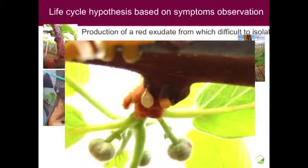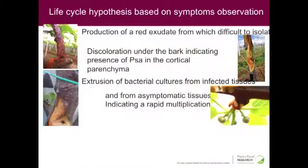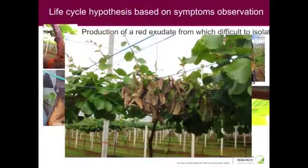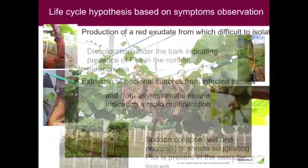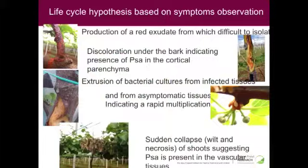We can have a drop of exudate from tissue that shows no symptoms whatsoever — the leaves are absolutely perfect, and yet you have a drop of exudate that is a pure bacterial culture, an inoculum that can infect a large part of your orchard. Finally, we have another important symptom: shoot dieback. Sometimes you struggle to find any PSA in that part of the cane — you find it only at the base. That indicates PSA can also be in the vascular system, leading to wilt and necrosis.